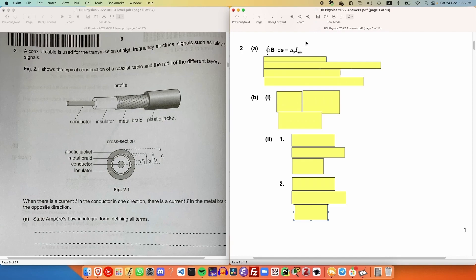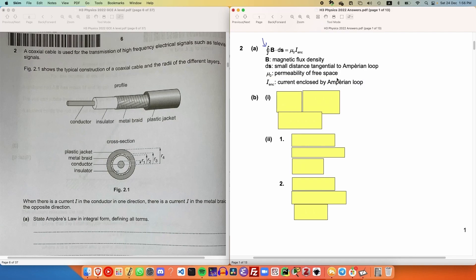This is Ampere's law in integral form, where B is the magnetic flux density, which is a function of space. Ds is a small length along the loop integral. Mu naught is a constant, and I enclosed is the current that is penetrating through the Ampere's loop.